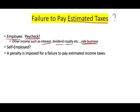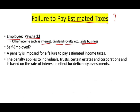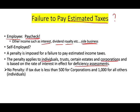A penalty is imposed for a failure to pay estimated income tax. The penalty is applied to individuals, trusts, certain estates, and corporations, and it's based on the rate of interest in effect for deficiency assessment. There is no penalty if the tax due is less than $500 for corporations, or $1,000 for individuals. If you're an individual and you came short $1,000, there is no penalty.